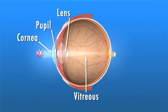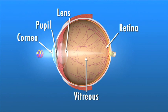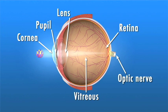These light rays are focused directly onto the retina, the light-sensitive tissue lining the back of the eye. The retina converts light rays into impulses sent through the optic nerve to the brain, where they're recognized as images.